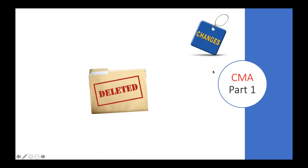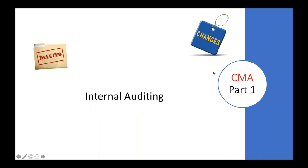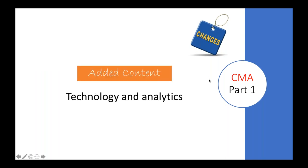What is deleted from the existing syllabus? The deleted topic is Internal Auditing. As you know, Internal Auditing is a part of Internal Controls. So although Internal Auditing is deleted from the Internal Controls topic, the weightage for that section still remains 15%. From January 2020 onwards, we will not have an Internal Auditing section or topic in CMA Part 1.